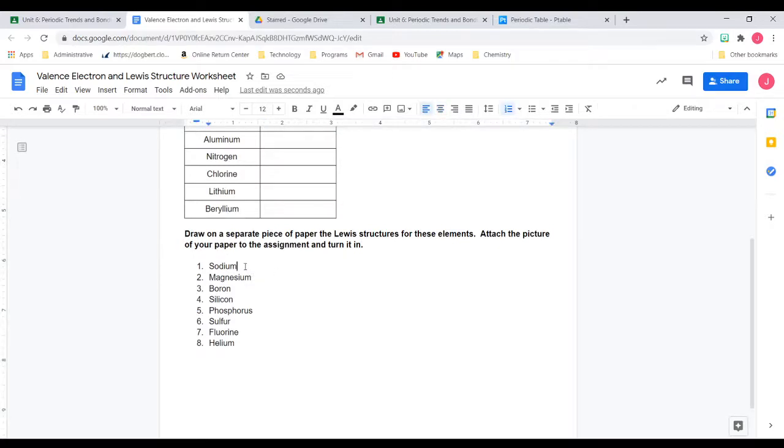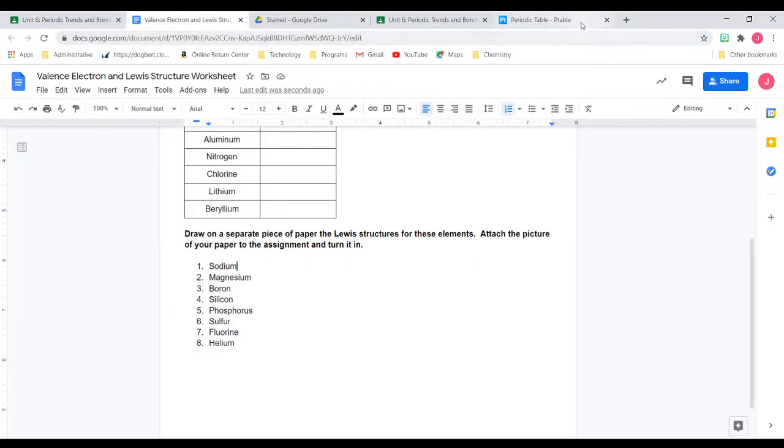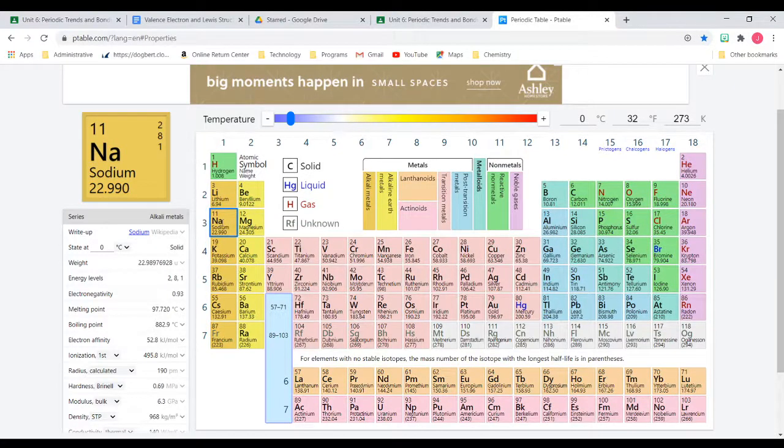Alright, so the first one we're going to look at, and I'll do for you, is going to be sodium. So we're going to go look at sodium. We're going to do the Lewis structures. And remember, we're talking about valence electrons. We're only talking about the ones on the outside ring. So we're going to look at sodium. That's what I'm looking at, sodium. So you're going to have to see, and you can click on these. So you can see sodium is here. And it is in group one. And group one tells us there's one valence electron.